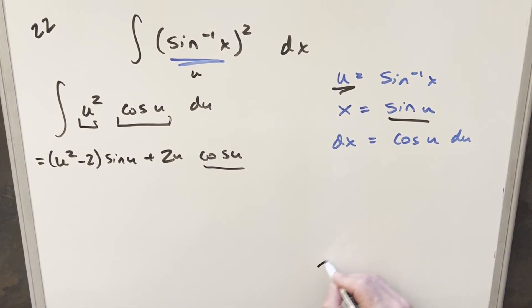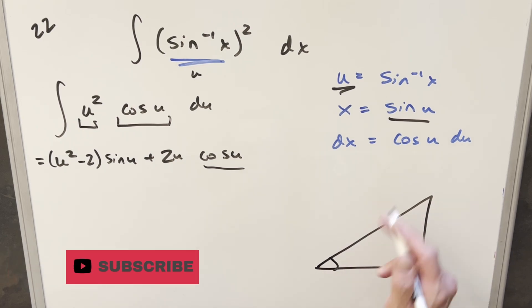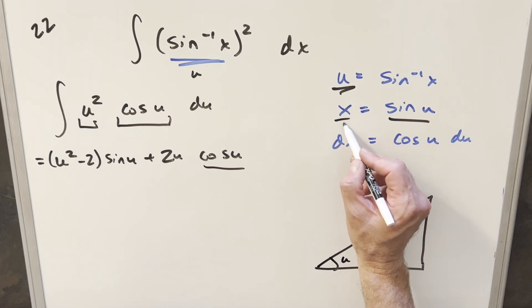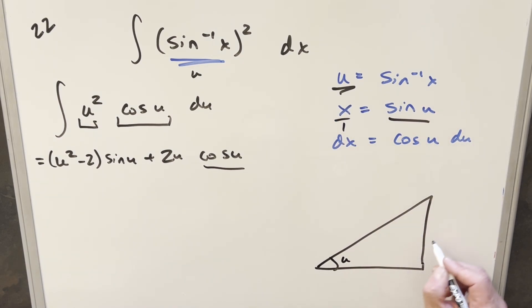Now, you don't really need the triangle in this case because it always works the same way with sine and cosine. But let's do it really quick anyway. So our angle is going to be u. And so we're saying sine u is going to be like x over 1. So we can do it like opposite over hypotenuse is x over 1. Then the third side, using Pythagorean theorem, we get 1 minus x squared.